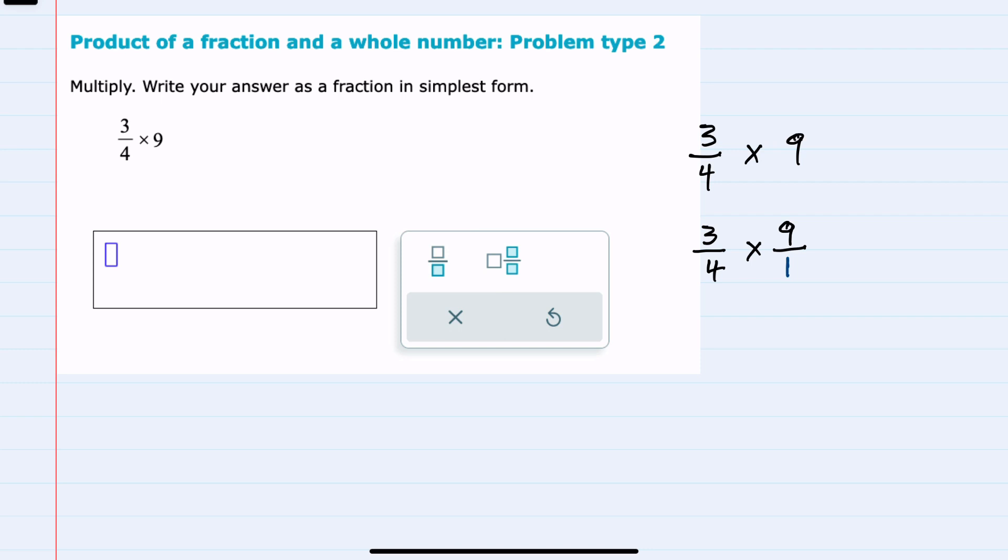I can use the process for multiplying fractions where I multiply across the numerators: 3 times 9 gives us a 27 numerator, and then multiply across the denominators: 4 times 1 gives us a 4 denominator.